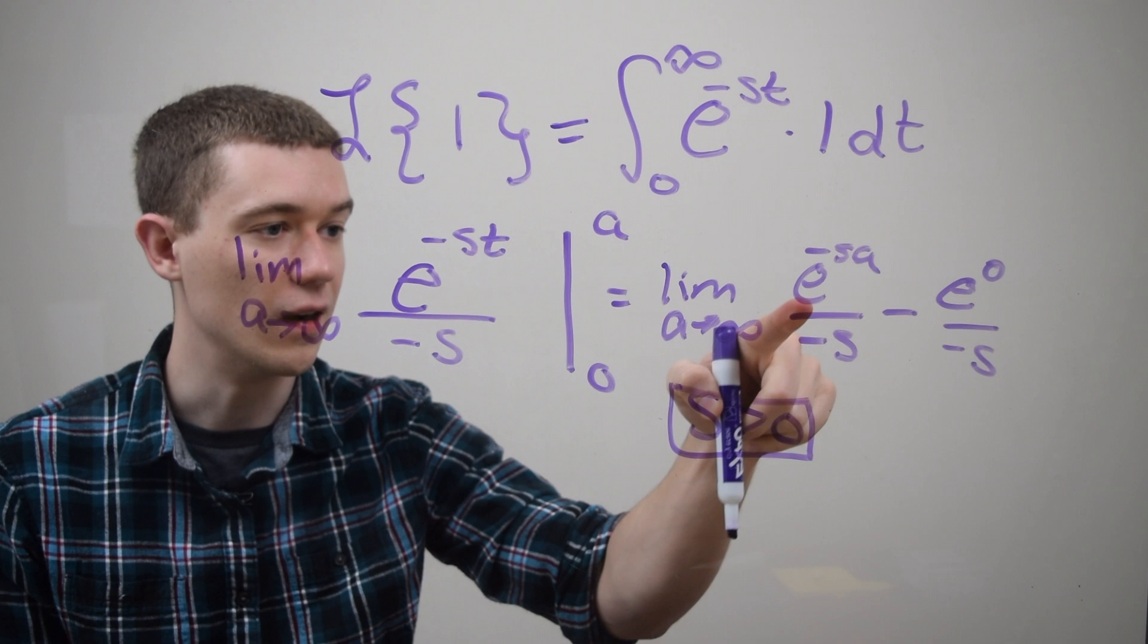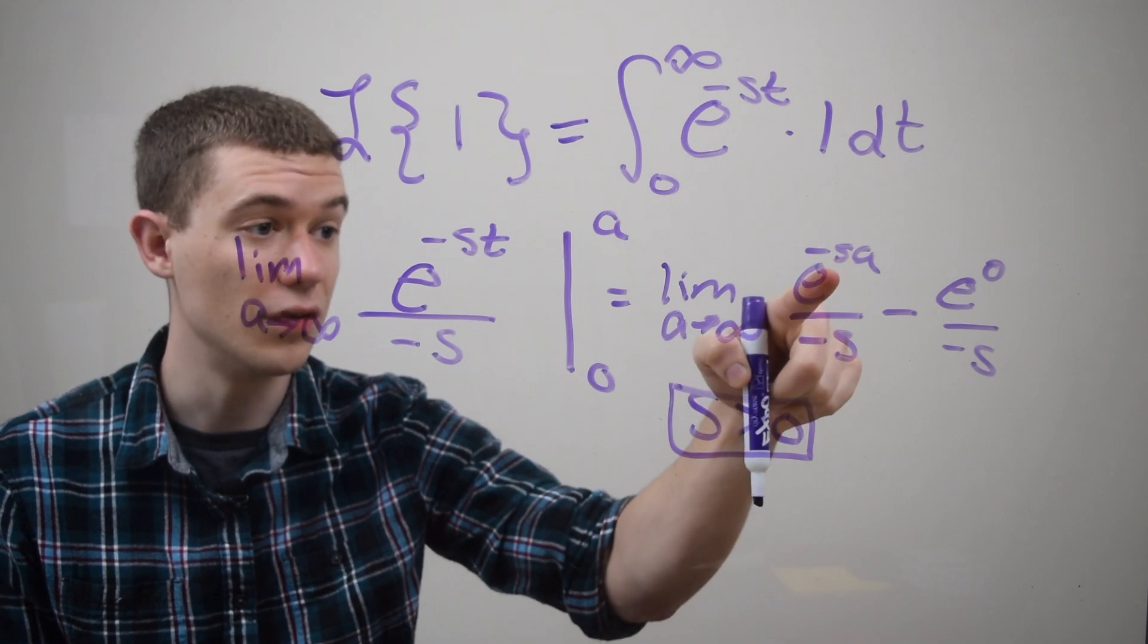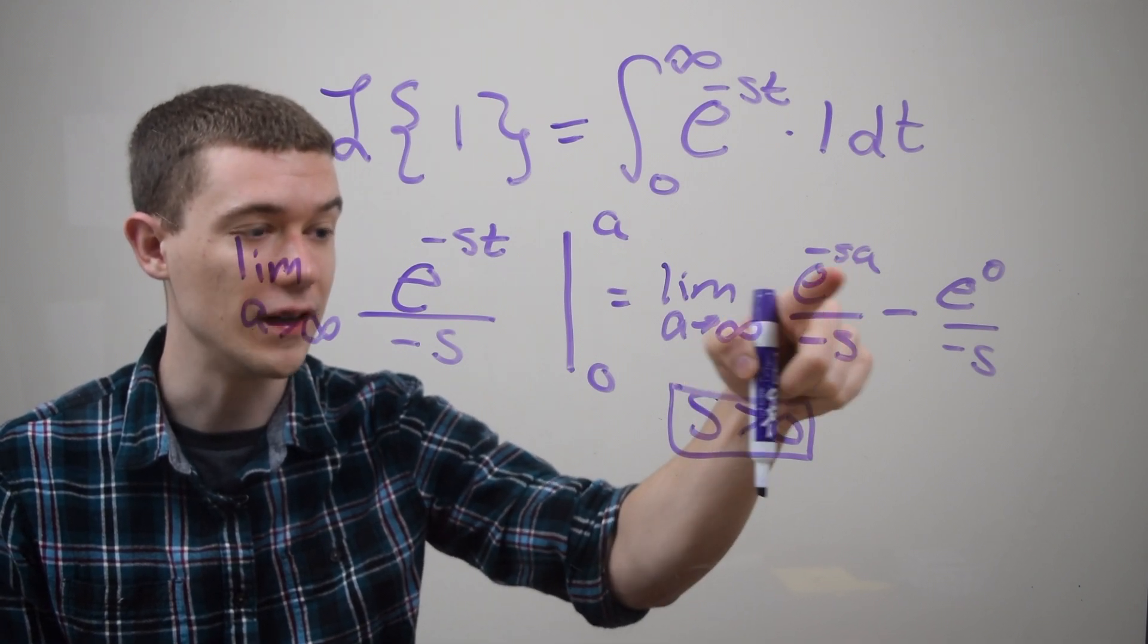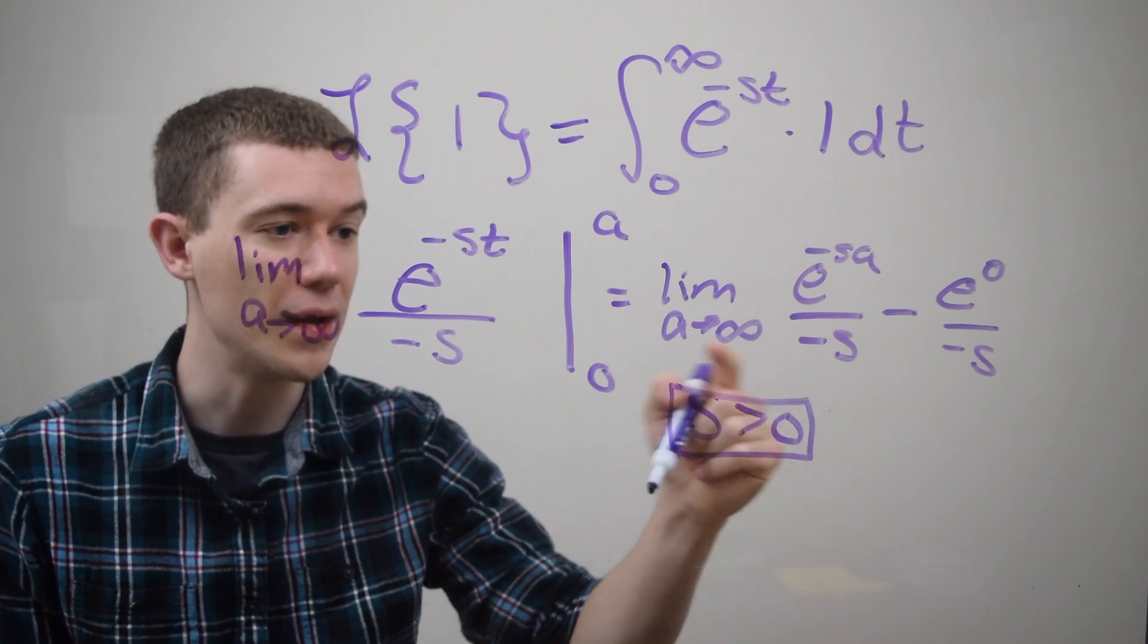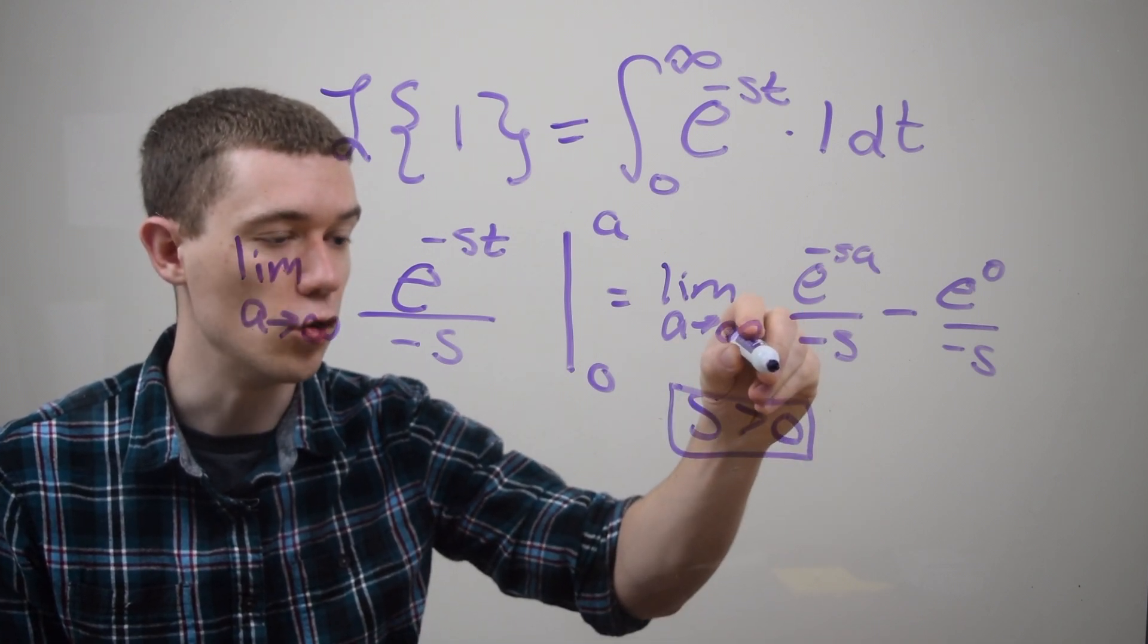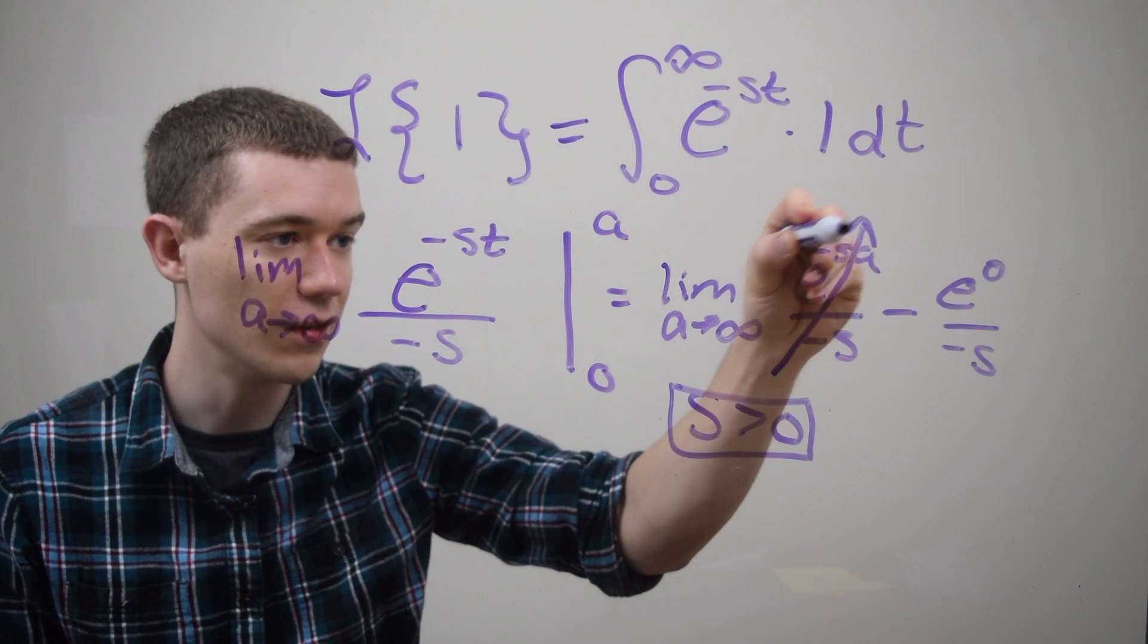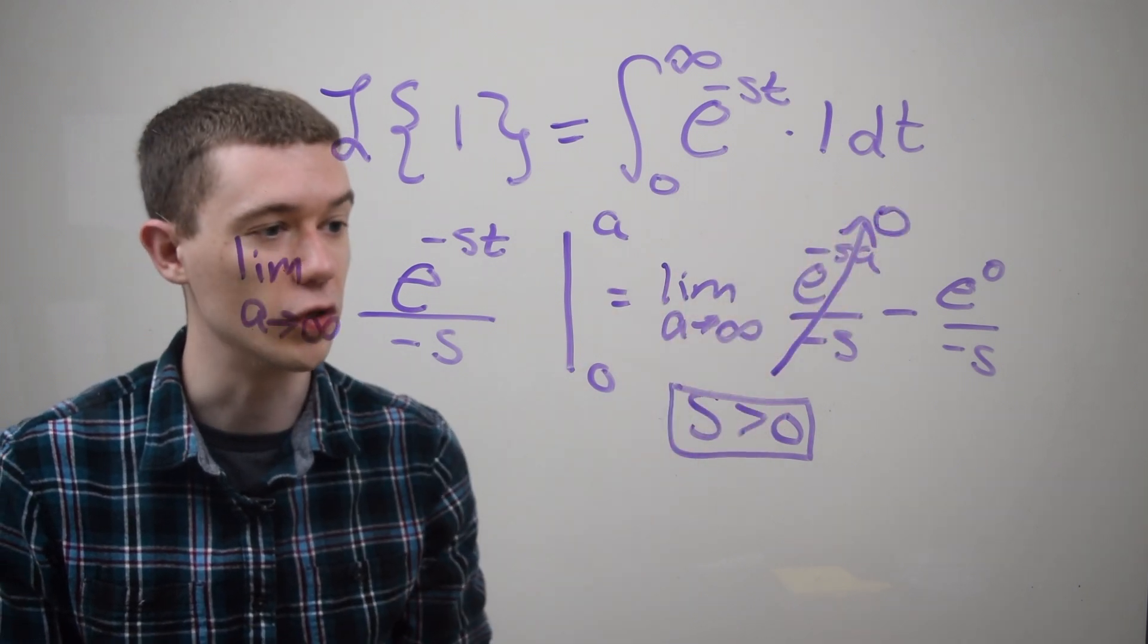Otherwise if s were negative, this would be tending toward e to the positive infinity, which is infinity. But if I make this restriction, the numerator tends to e to the minus infinity, which is 0, which is what you want.